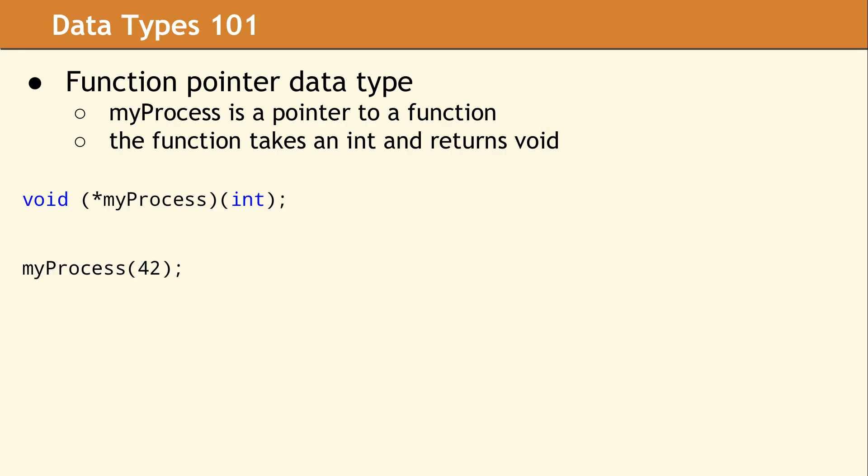The declaration and usage of a function pointer looks like this. This line of code declares a function pointer named MyProcess. It can point to any function which takes an integer parameter and returns void. And then you can call MyProcess passing an integer, just as if it were a normal function.